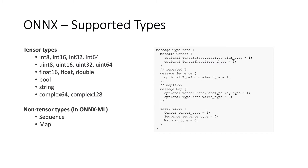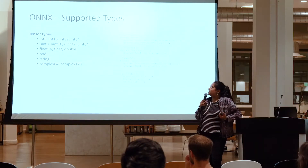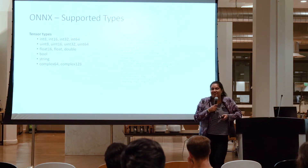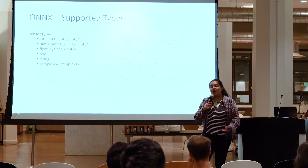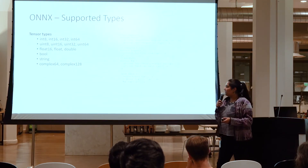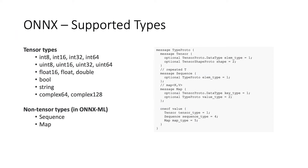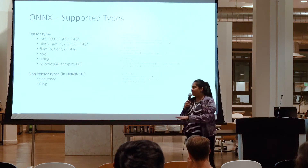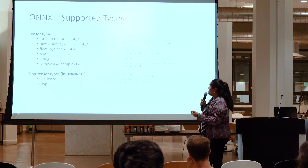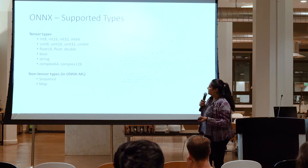Our supported data types include tensor types: integers, unsigned integers, floats, doubles, booleans, strings, and complex integers — everything you'd expect from a traditional framework. We also have non-tensor types defined in Onyx ML. We have two specs: one for deep learning and one for traditional machine learning. These non-tensor types are sequences and maps — essentially other ways to represent information.